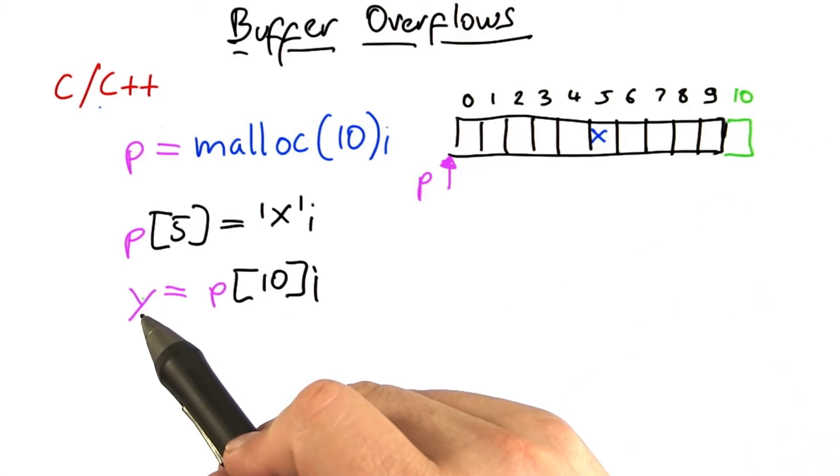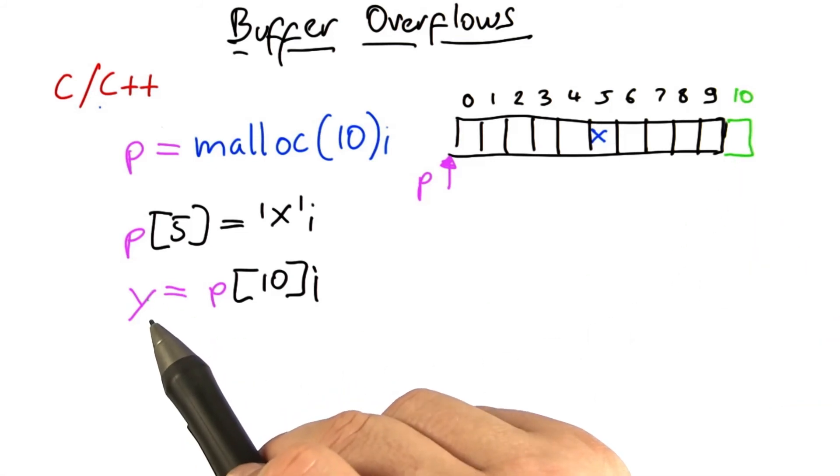The behavior of a C program at this moment becomes undefined. That is, anything can happen. It is possible that some completely random value is stored in y. This is actually the most likely outcome.